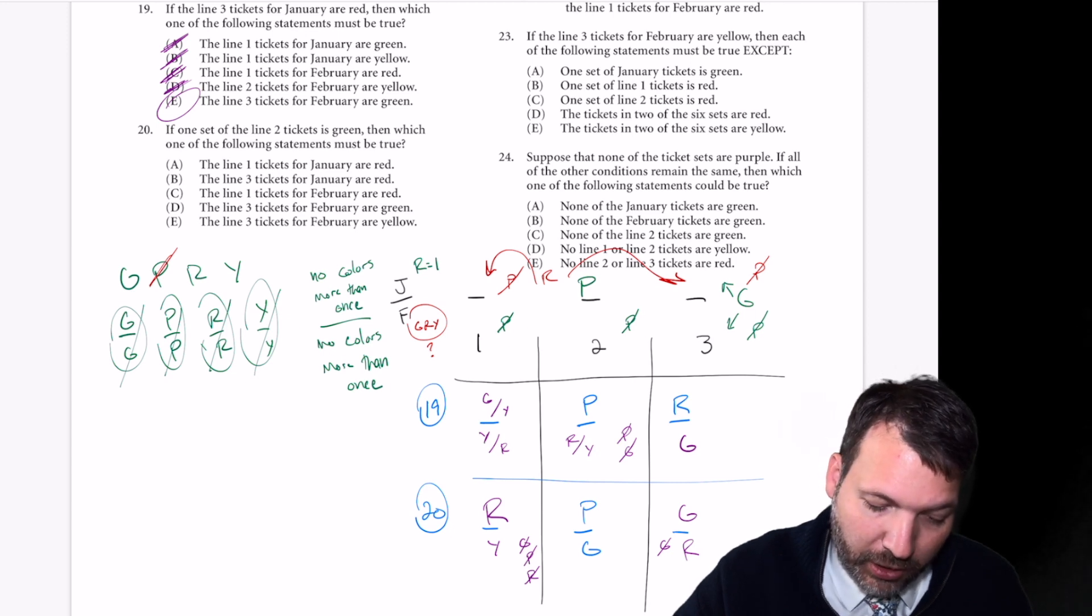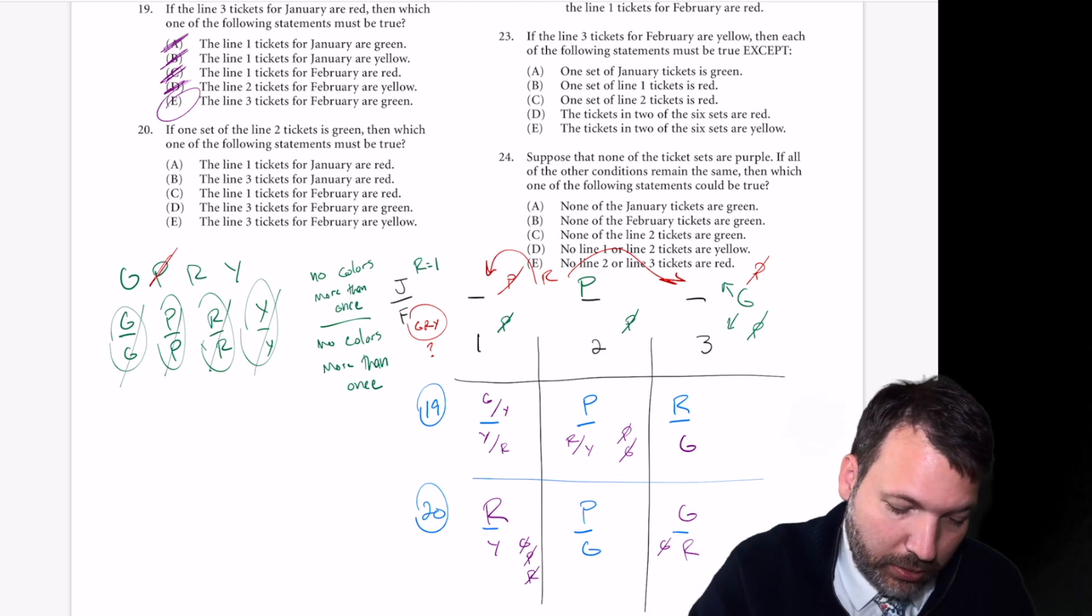So I think we can figure this one out exactly. Let's see what must be true. The line one tickets for January are red. Yes, there it is. Circle A and move on.